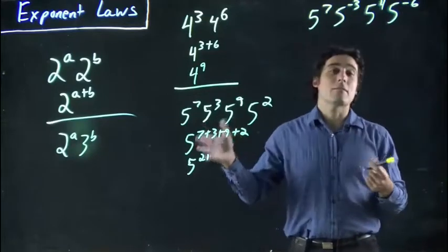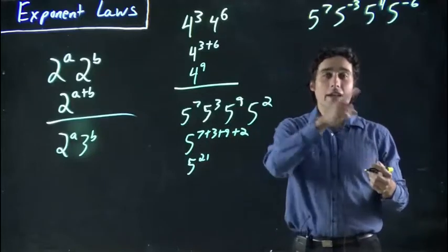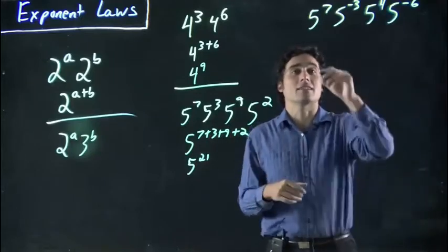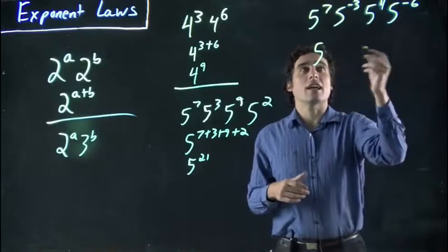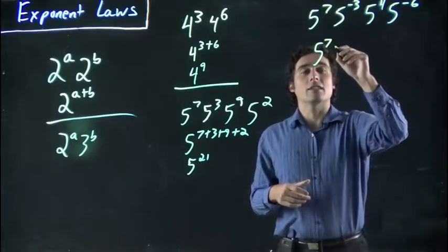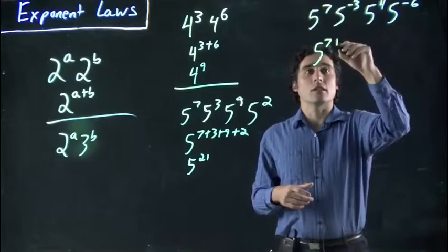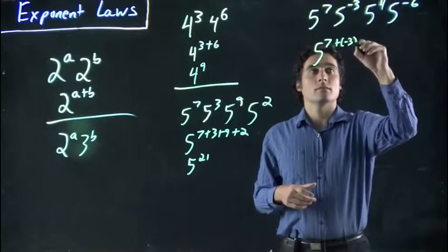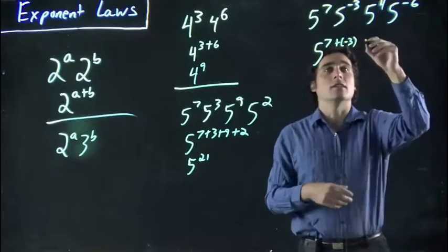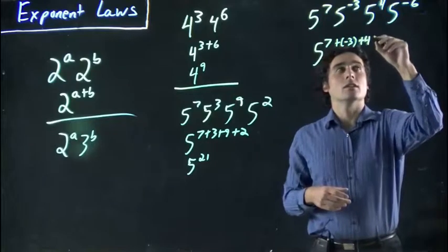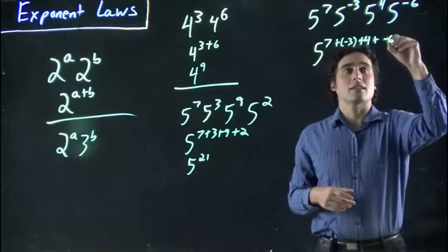It's the same basic math. We still are adding exponents, but some of them are minus. Some of them are negative numbers, so we have 5 to the 7, and we're going to think it's plus minus 3. So, it's really going to subtract 3. Plus 4, plus minus 6.